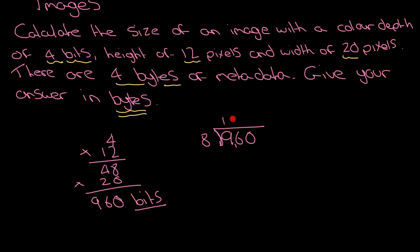So 960 divided by 8. That goes into there once, that's going to leave you with one left over, that goes into there twice - 120 bytes. Still need to deal with the metadata. 4 bytes of metadata, so I've got 120 bytes plus 4. I'm not multiplying the metadata, I'm just adding it on. That is therefore 124 bytes. So that's how I calculate an image file which has got metadata in it.